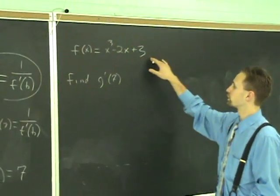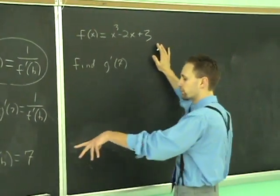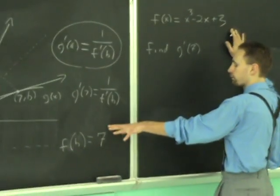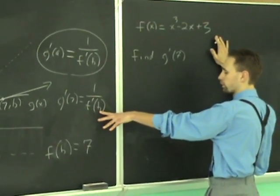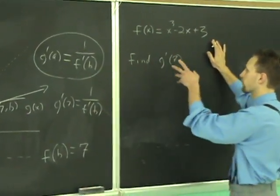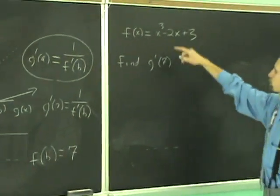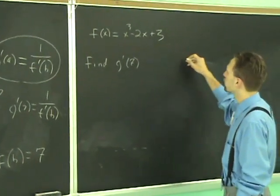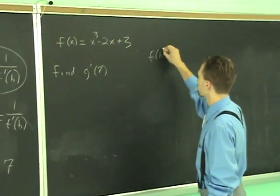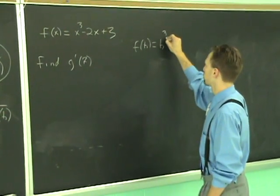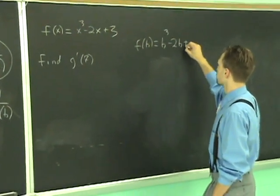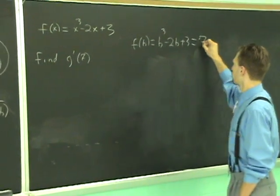So, I'm going to work it out here. F of x equals this. What this says is that when we plug in the value of B that we're looking for, we ought to get 7 out of F of x. So, you simply set this equal to 7. And it happens to be B cubed minus 2B plus 3 equals 7. And at this point, you have to solve this equation.